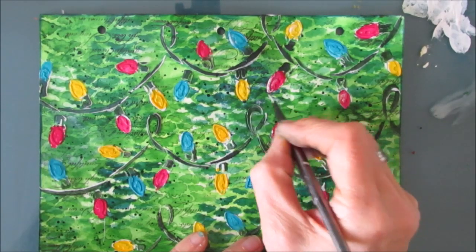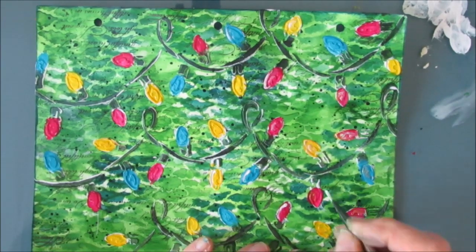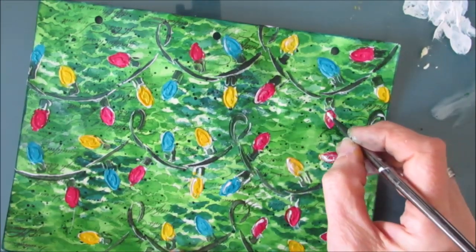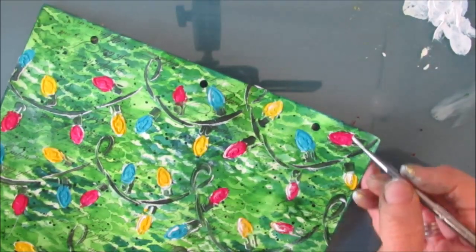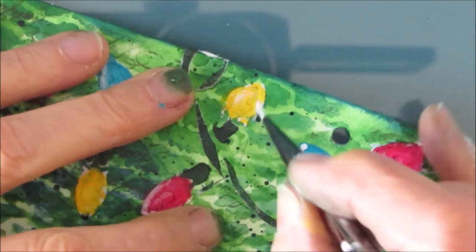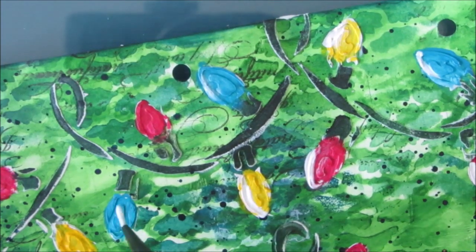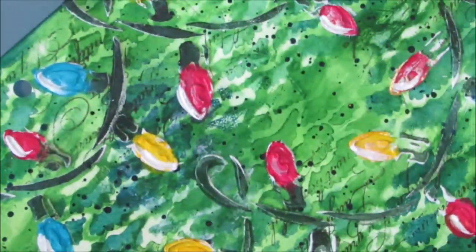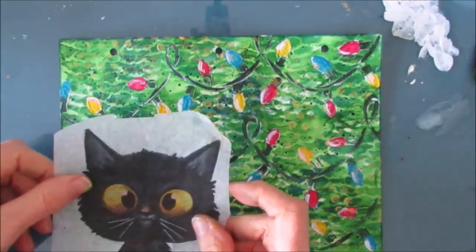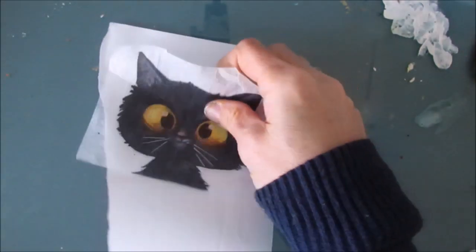I'm using my liner brush with thinned white paint and I'm just adding highlights and I'm going on top of part of the modeling paste texture. You could put the stencil back on and stencil white on and it would highlight all parts of the raised area.